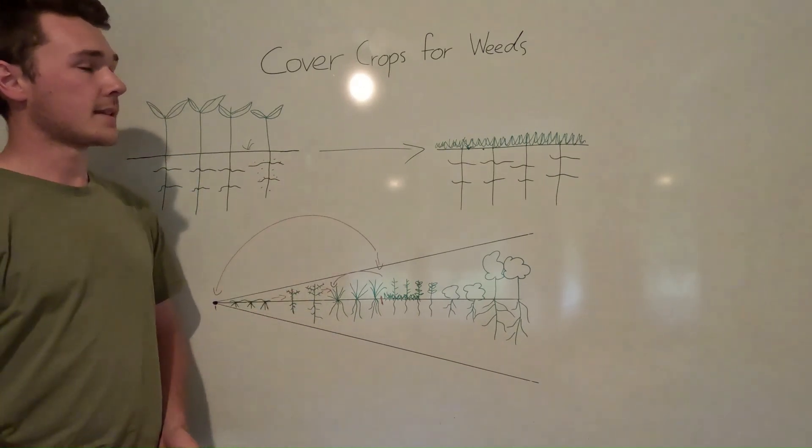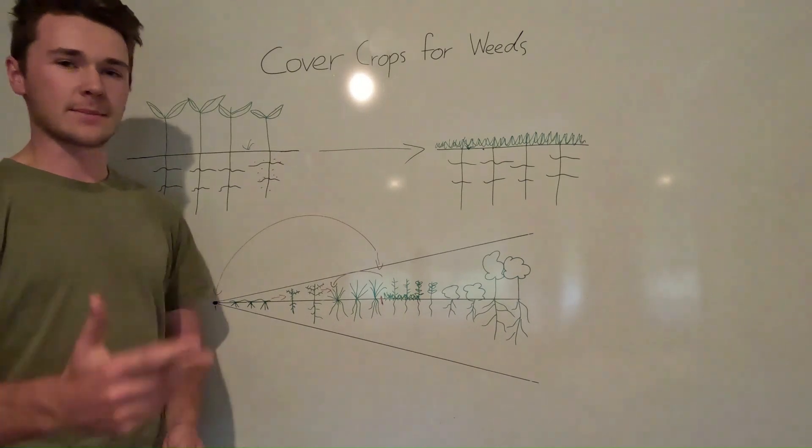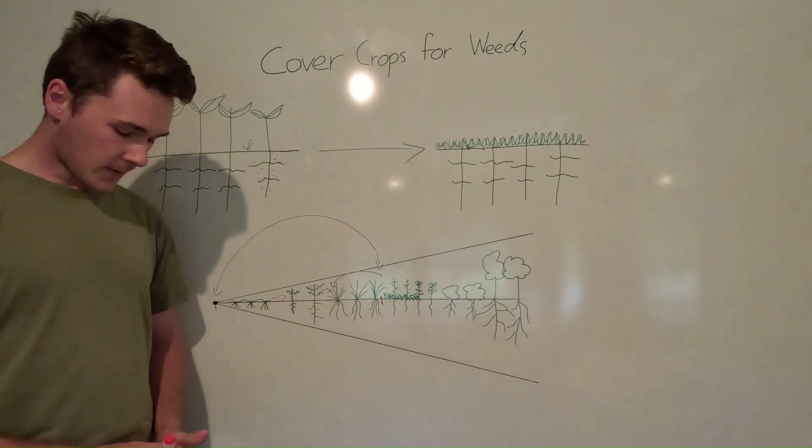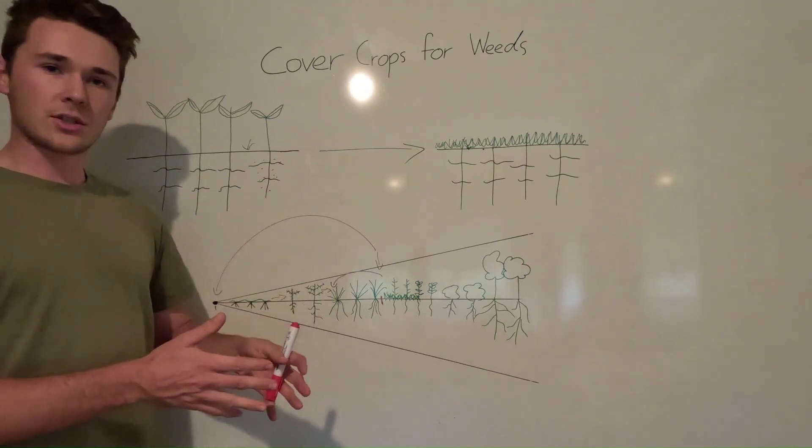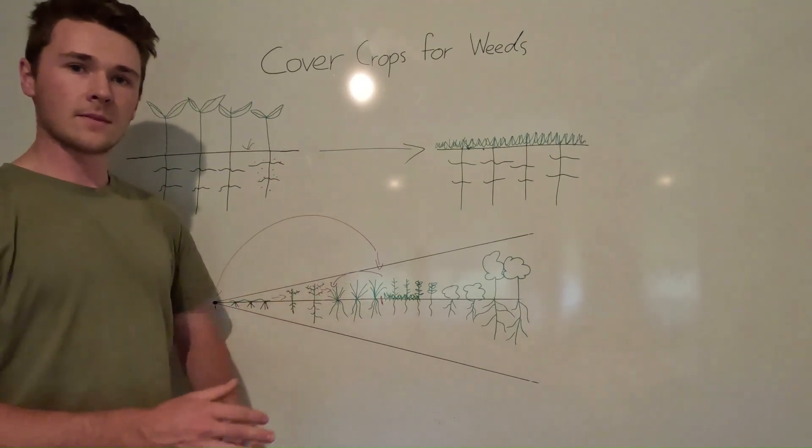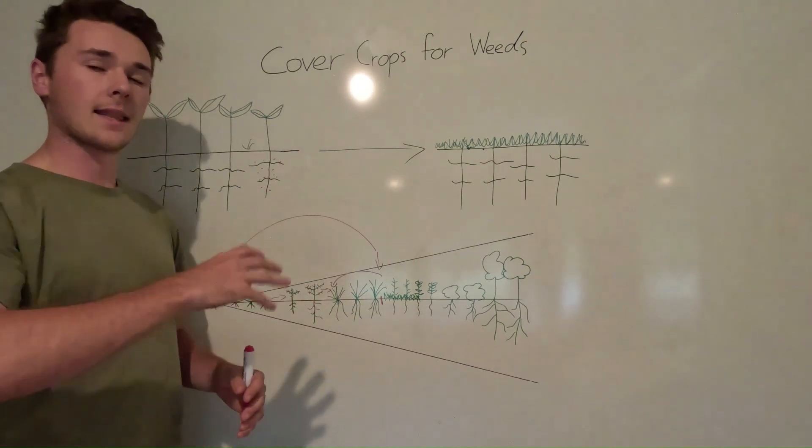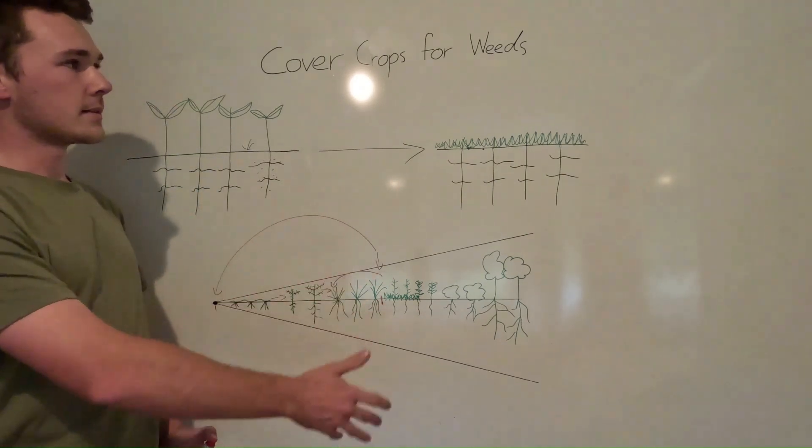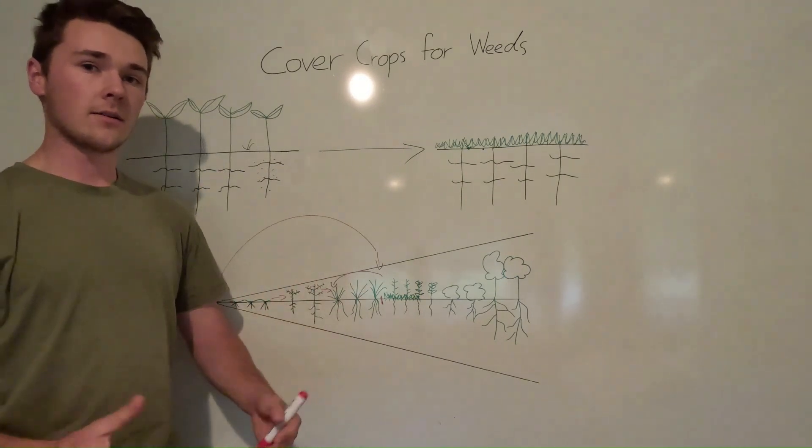So weeds are really interesting in the sense that they're not there just to smite you. They don't grow just because they don't like you farming. It's a particular niche in that ecosystem that allows them to grow. And so understanding why that weed is there, what function does it serve, or why is it allowed to grow?